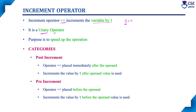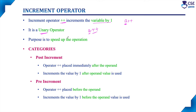A unary operator is nothing but an operator with a single operand. Here, only one operand is there. Either this operator we can place after the operand or before the operand. Since this operator works with a single operand, it is called a unary operator. The main purpose of using this increment operator is to speed up the operation.